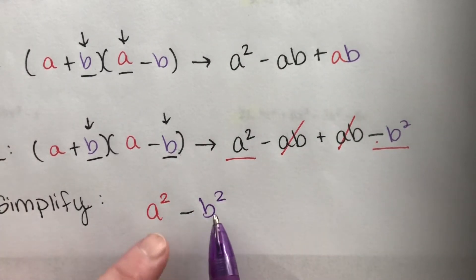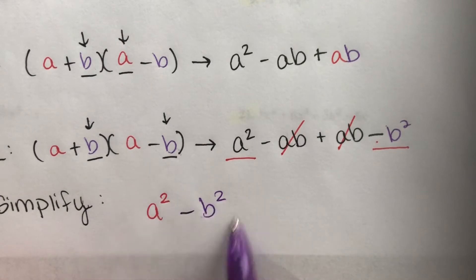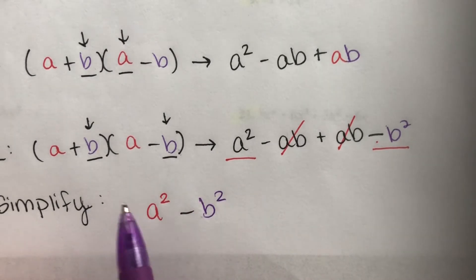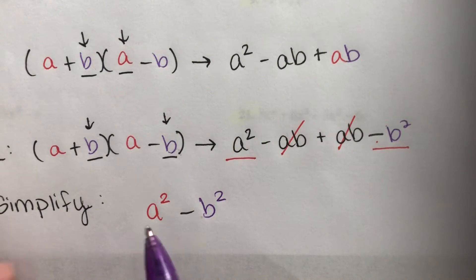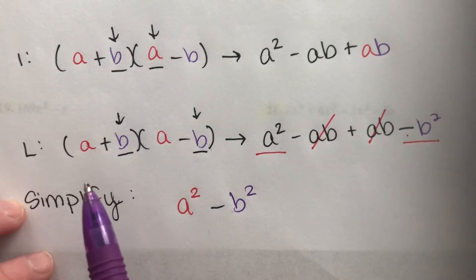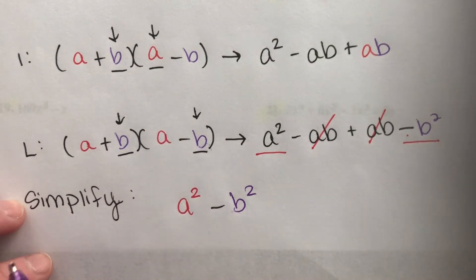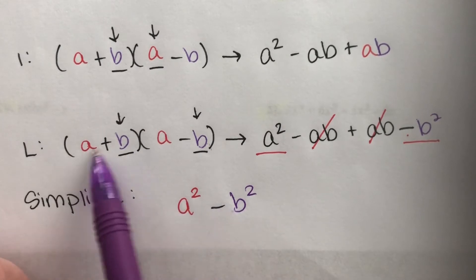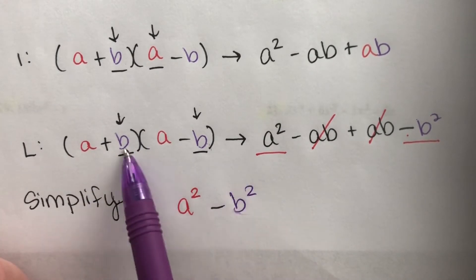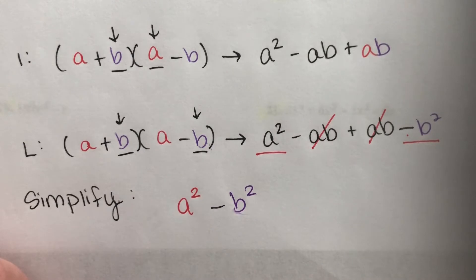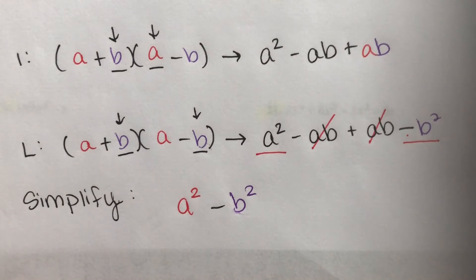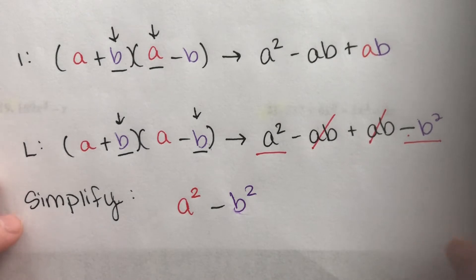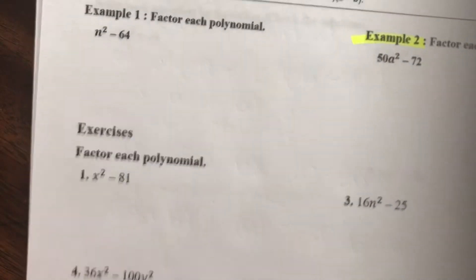So when we start with the difference of two squares, if we want to factor it, all we do is create two binomials that look exactly the same — one has a plus and one has a minus. Where do we get the numbers? Take the square root of the first term — that's your first term — and the square root of the second term — that's your second term. We'll do some examples of factoring, then move on to solving by setting equal to zero.